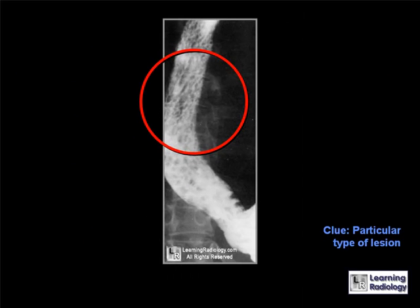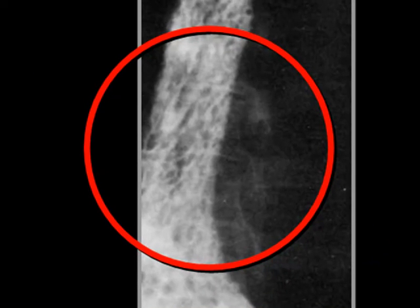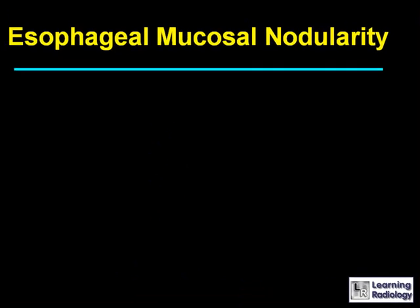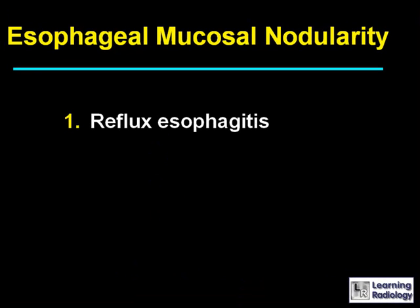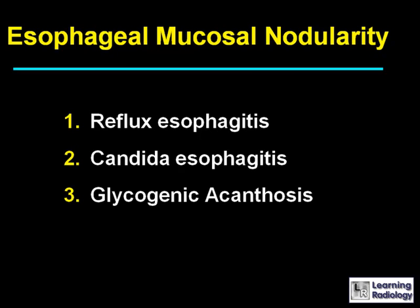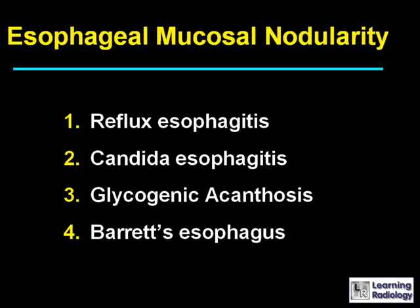The next differential diagnosis is for esophageal mucosal nodularity. There are four causes: reflux esophagitis, Candida esophagitis, glycogenic acanthosis, and Barrett's esophagus.